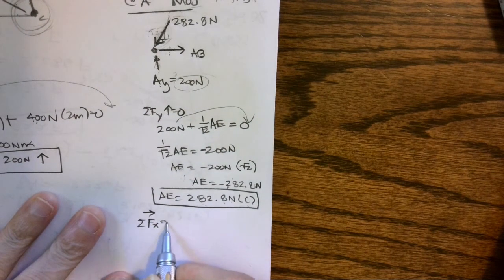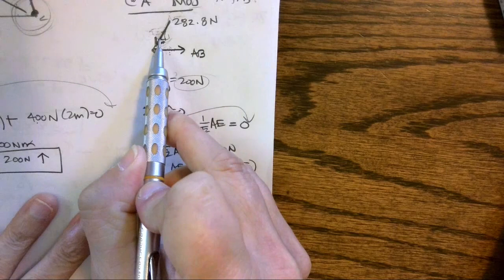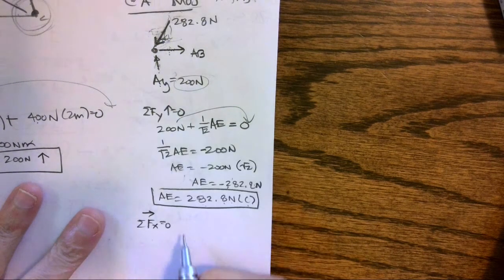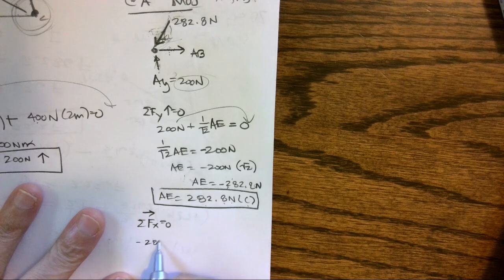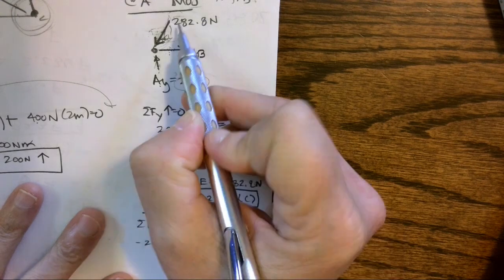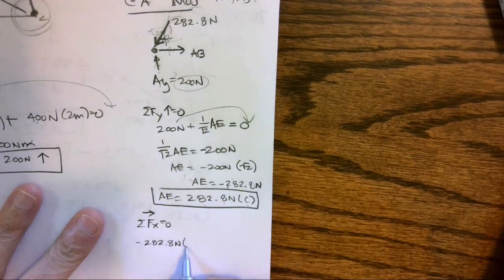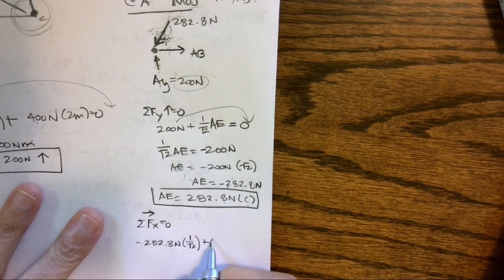To the right is positive, and I have—okay, that's got a negative component in the X—so I have negative 282.8 Newtons. That's the hypotenuse, so I need the X component: one over square root of two, plus AB equals zero.